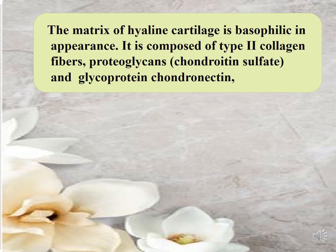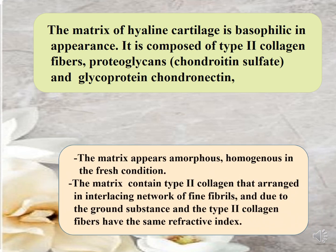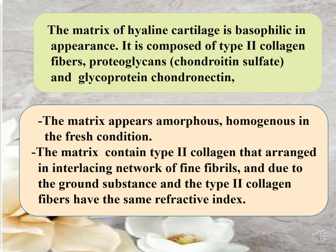The matrix of hyaline cartilage is basophilic in appearance and is composed of collagen type 2, proteoglycan chondroitin sulfate, and the glycoprotein chondronectin. The matrix appears homogeneous in a fresh condition because the collagen type 2 fibers are arranged in an interlacing network of fine fibrils within the ground substance, and the collagen type 2 fibers have the same refractive index as the ground substance — making the matrix appear homogeneous in hyaline cartilage.